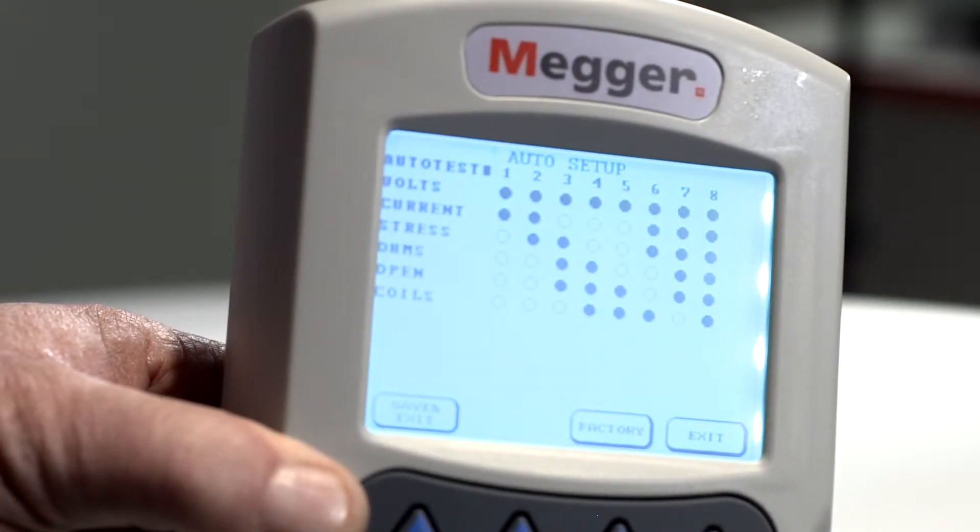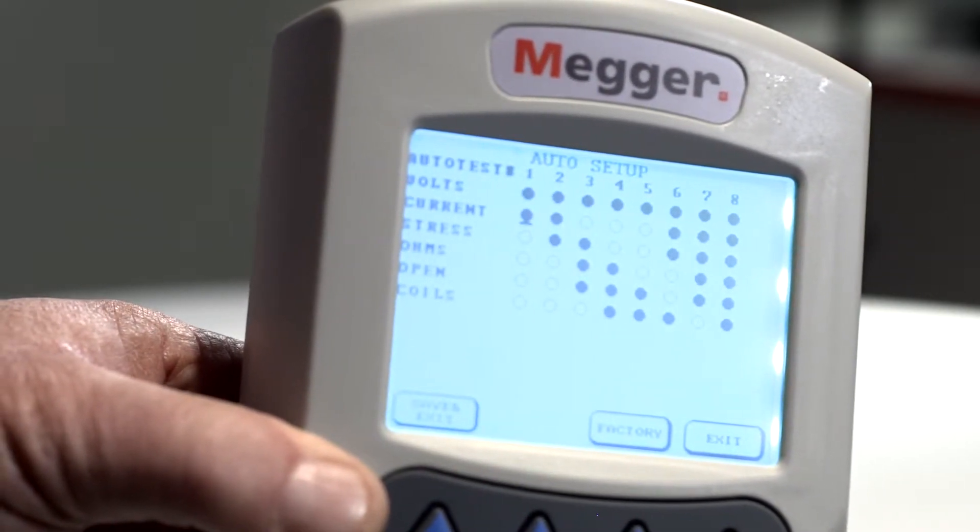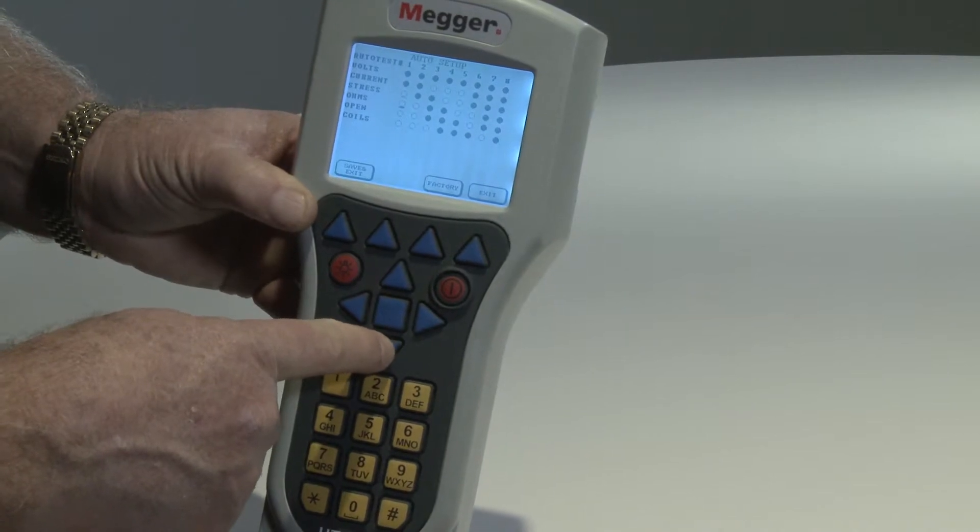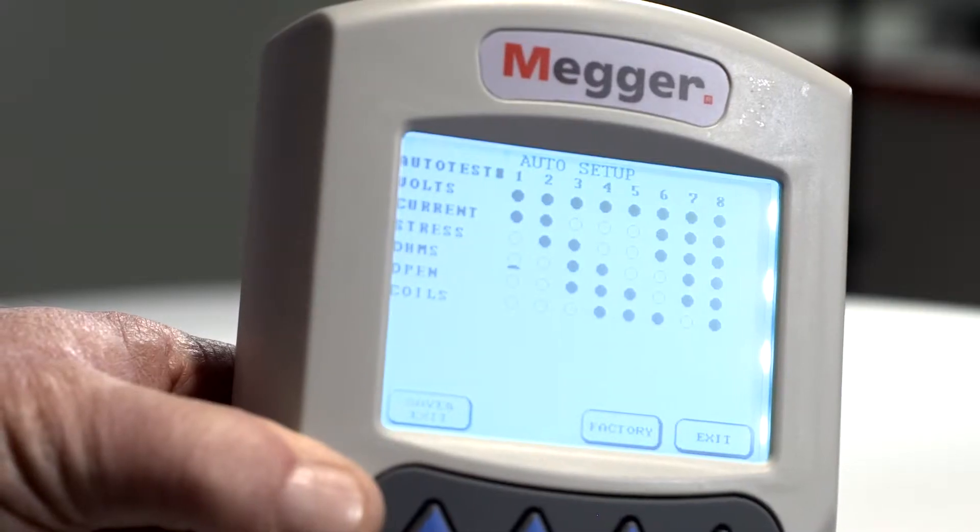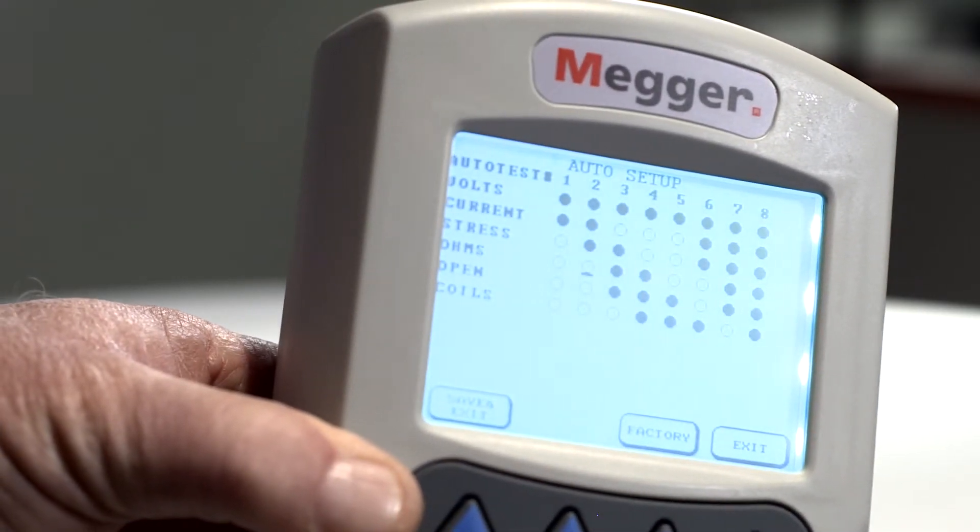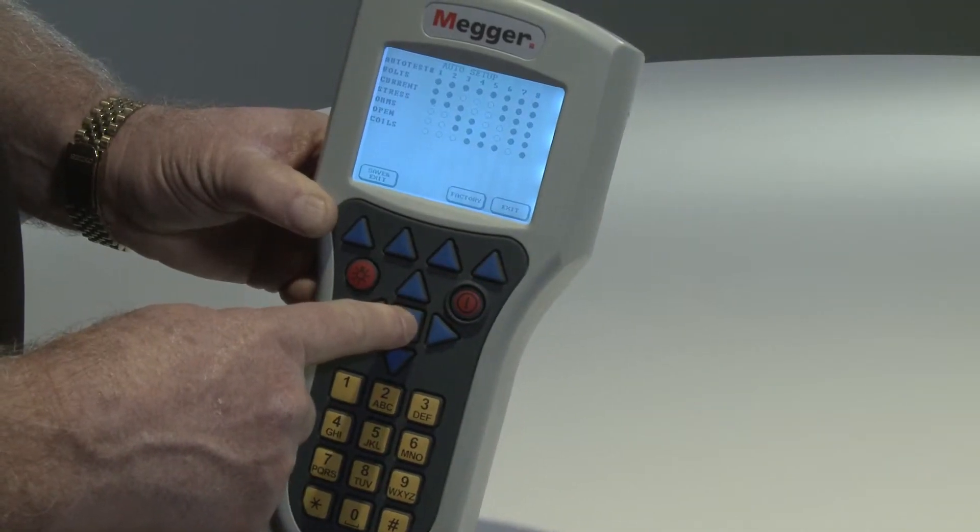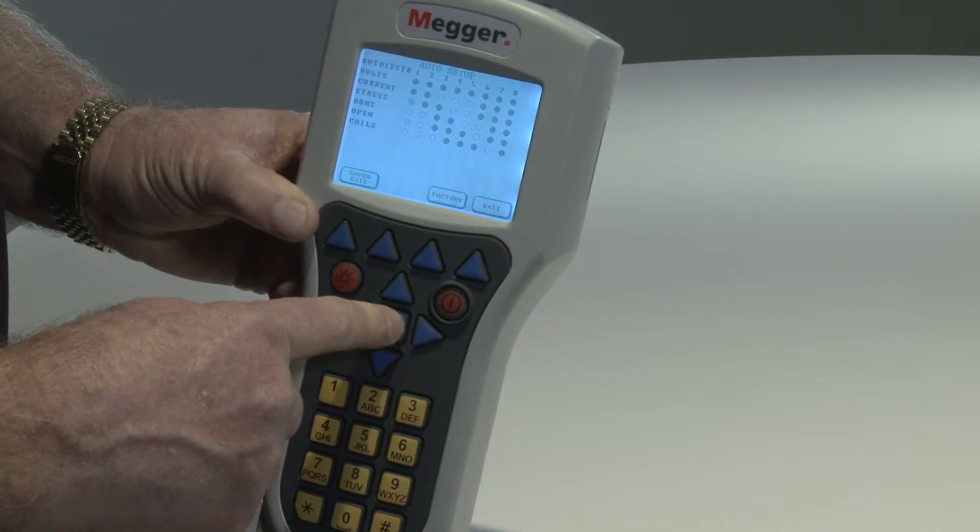Each darkened dot indicates an active test in an auto test series. To modify auto test, use the up, down, left, and right navigation keys to move the flashing cursor to the test and number desired. Press the Enter Return Home key to turn the test on or off.